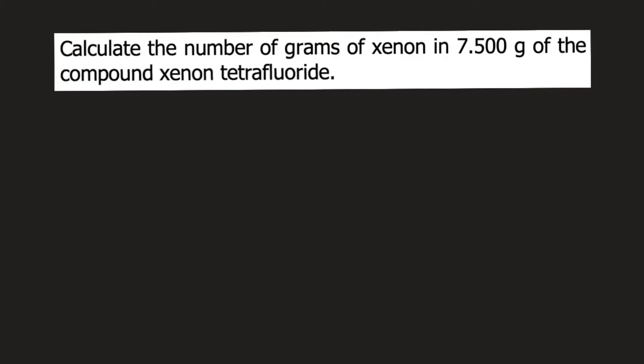Calculate the number of grams of xenon in 7.5 grams of the compound xenon tetrafluoride. In our problem, we are initially given 7.500 grams of xenon tetrafluoride. Its chemical formula is XeF₄.